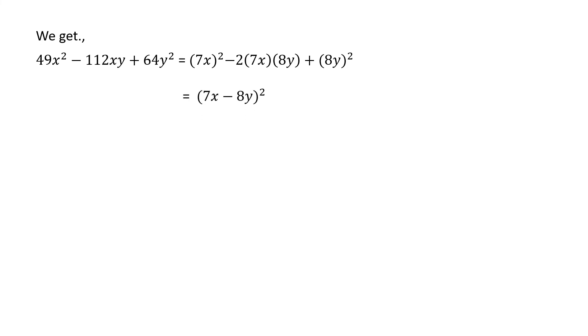Next, now we know that x square minus 2xy plus y square is equal to x minus y whole square. So I have taken x as 7x minus y value 8y whole square.